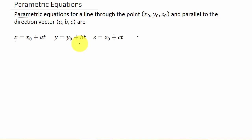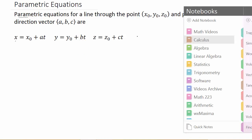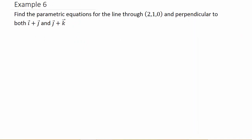Alright, so let's get started on example six. Find the parametric equations for the line through the point (2, 1, 0) and perpendicular to both of these vectors: vector i plus vector j, and vector j plus vector k.